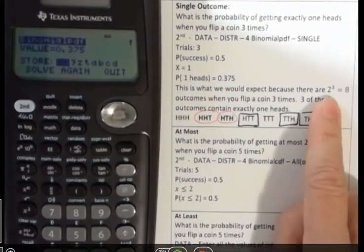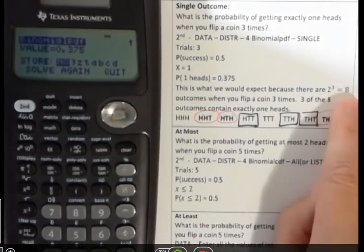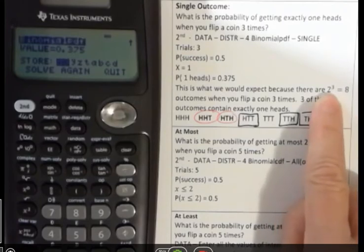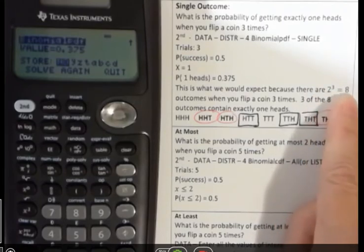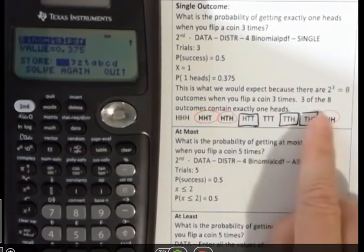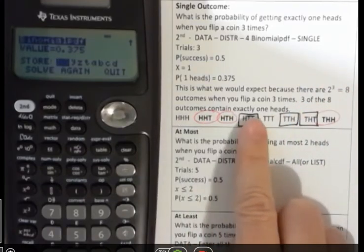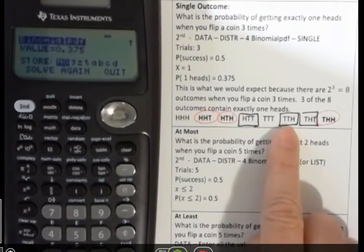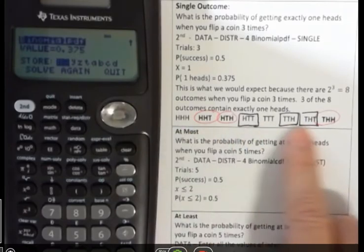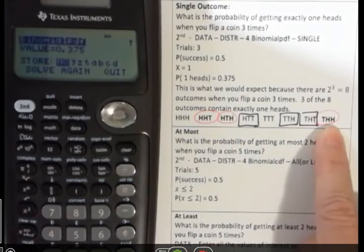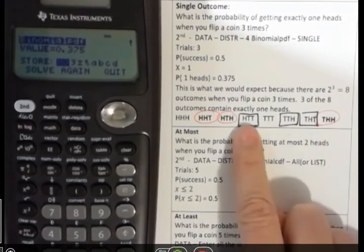This is what we'd expect because 2^3 would give us our sample space, because there's two outcomes, heads or tails. And we have three trials. So 2^3 will be eight outcomes. And then three of the eight have exactly one head, which I put boxes around. This is the entire sample space of what could happen if you flip three coins. Three have just one heads.